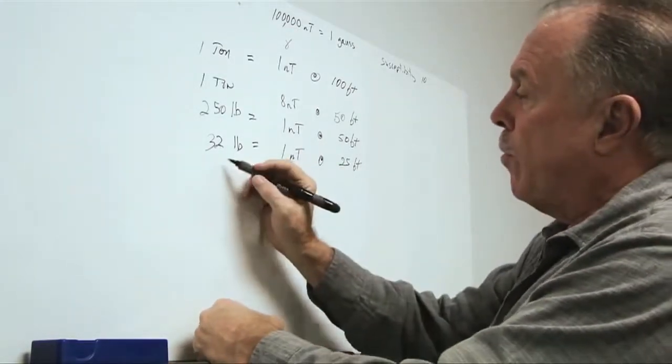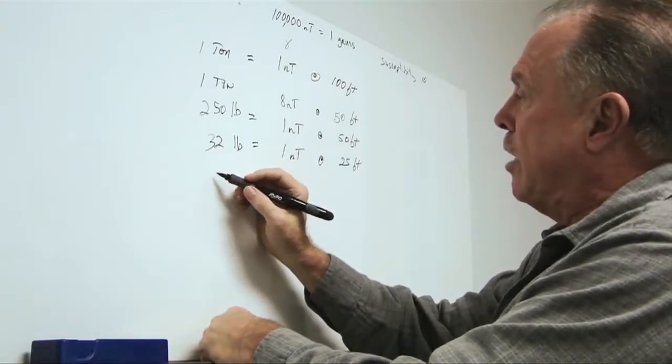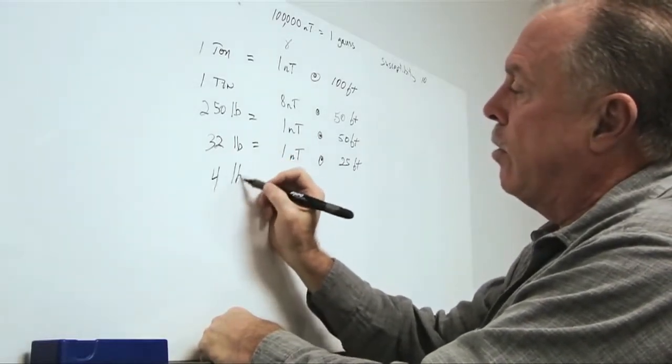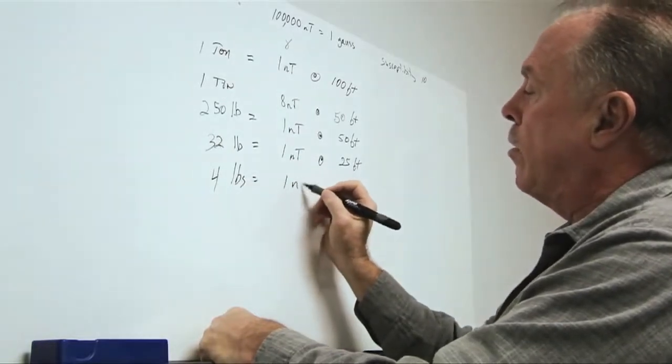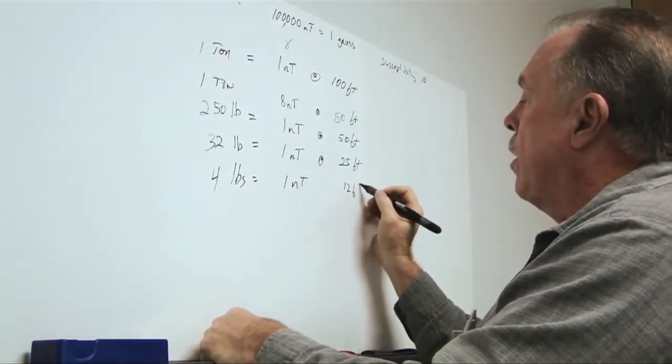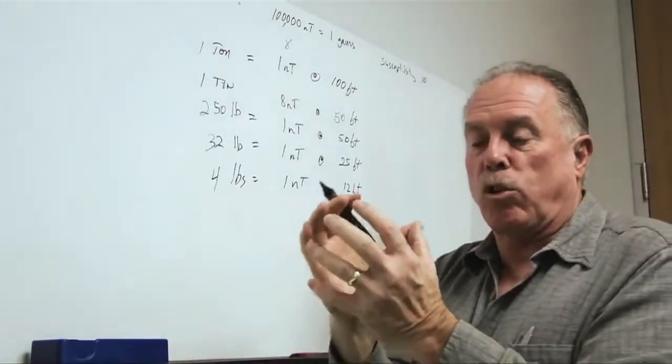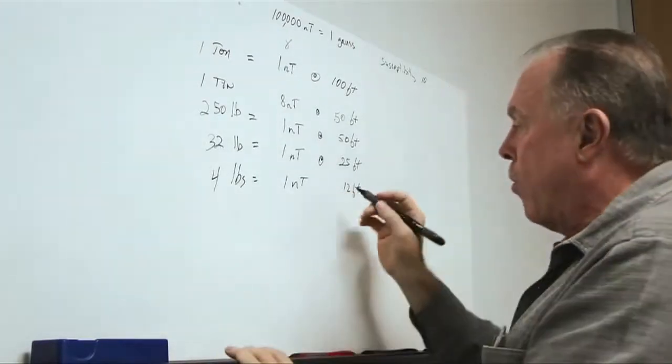We can go further. So, let's take this down to four pounds equals one nanotesla at 12 feet. Now, we can see something that is grapefruit-sized at a range of 12 feet.